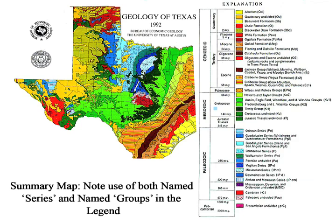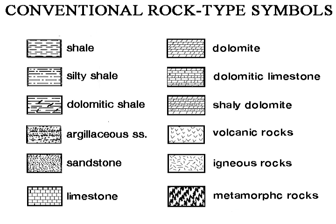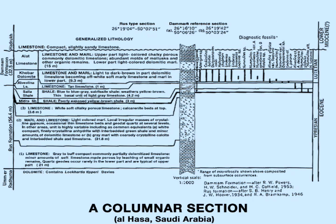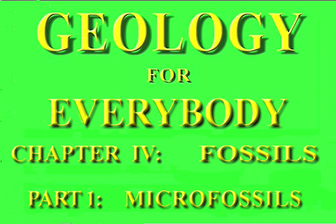This map of the geology of Texas is a summation of many maps drawn on a much larger scale. Here are some of the universally recognized symbols for sedimentary rocks, and from my time in Saudi Arabia, a columnar section of Tertiary formations in a profile I use to locate structure. Next is a series about fossils — part one concerns microfossils, a topic too complex for complete coverage in the allotted time.